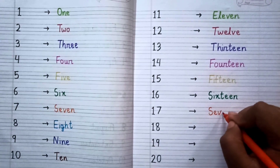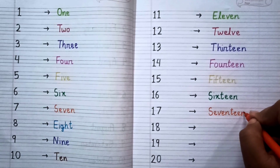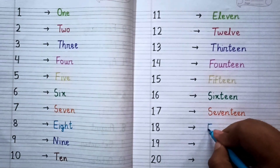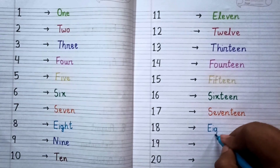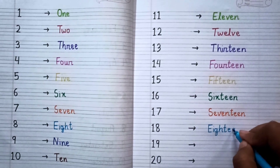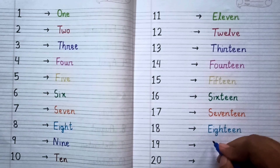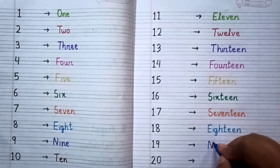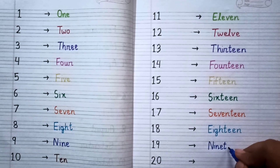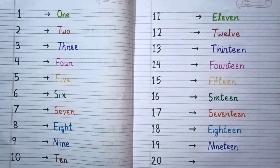After sixteen, now I am writing seventeen, S-E-V-E-N-T-E-E-N, seventeen. Now I write eighteen, E-I-G-H-T-E-E-N, eighteen. Now I write nineteen, N-I-N-E-T-E-E-N, nineteen.